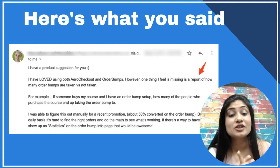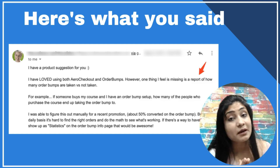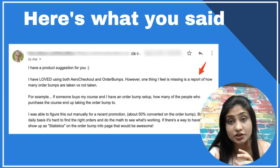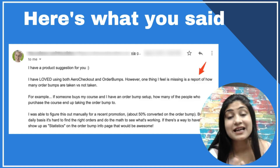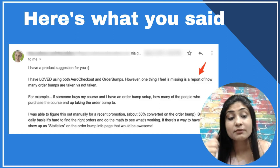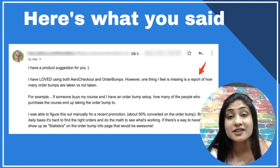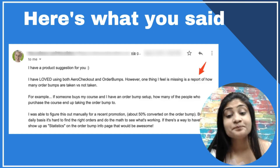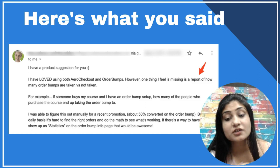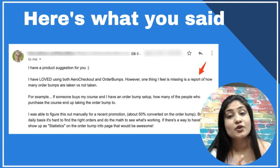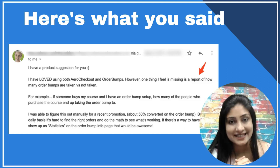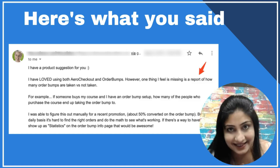Here's an email we got from one of our users of Order Bump. She says: although she loves Arrow Checkout and Order Bump, she feels reporting is missing — specifically how many order bumps were taken versus not taken. For example, if someone buys her course and she has an order bump set up, how many people who purchased the course actually took the bump too? She was able to figure it out manually for one promotion where the bump converted at 50%, but on a daily basis it's really hard to do the math and see what's working.